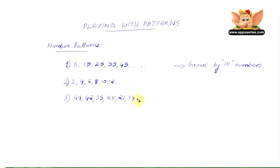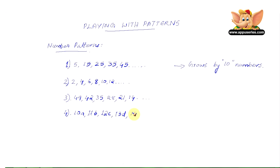In the fourth number pattern we have 10A, 11B, 12C, 13D, 14E, 15F, and 16G. Each number increases by 1 and each letter moves to the next letter of the alphabet.